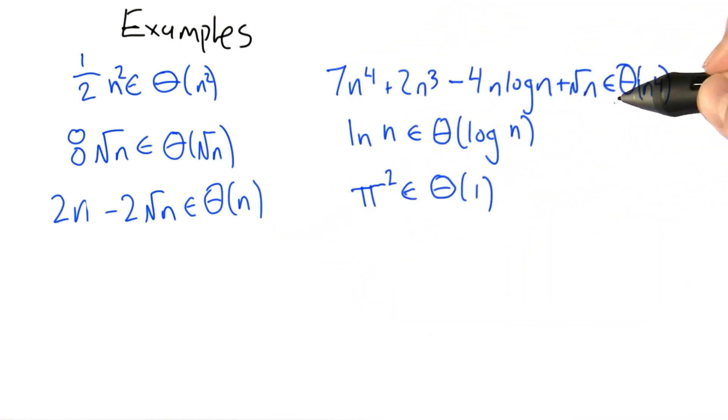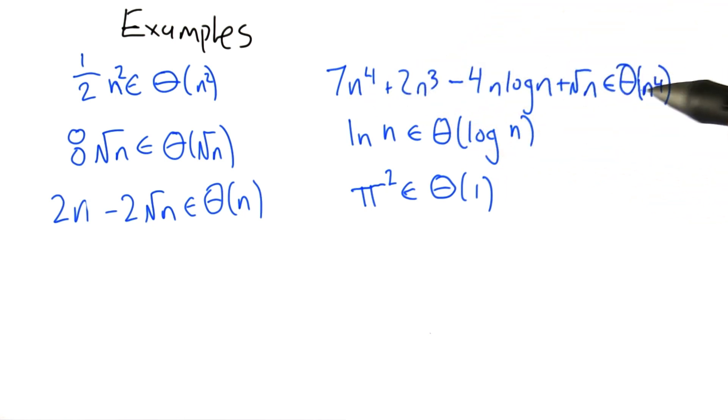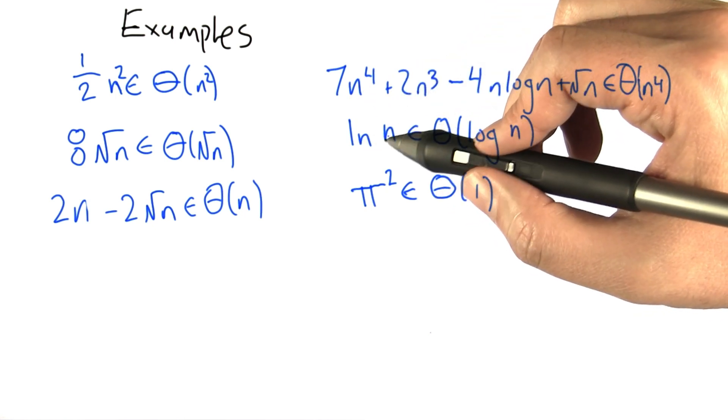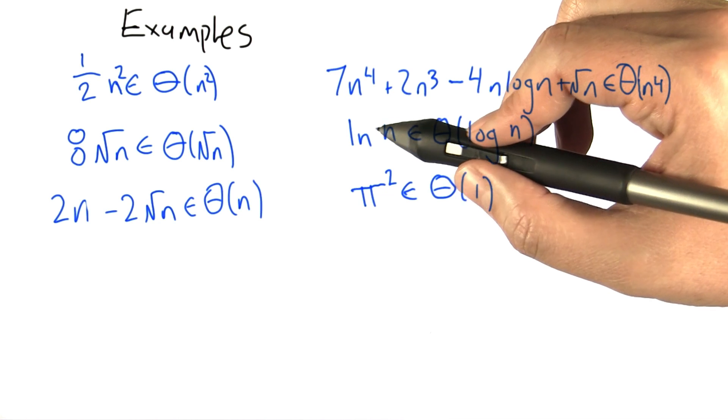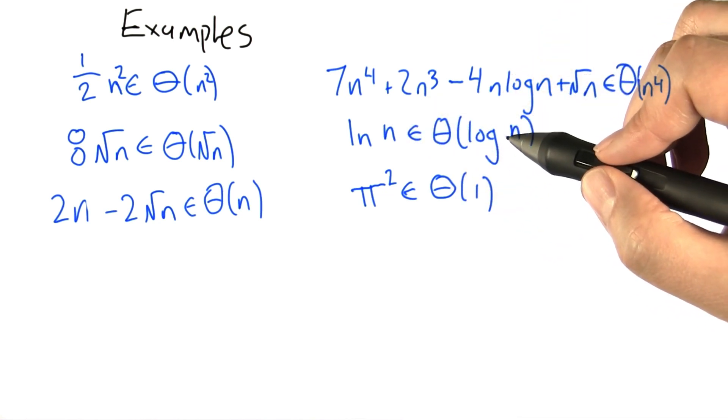A complicated expression like this, where we have n⁴, which is the term that grows the fastest, becomes Big Theta of n⁴. The natural log of n, in fact any base log of n, is Big Theta of any other base log of n, as long as it's a constant.